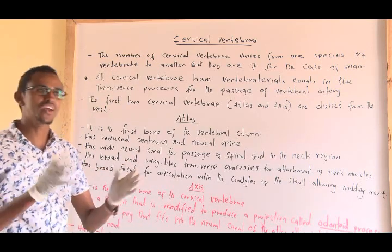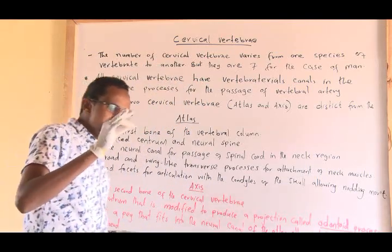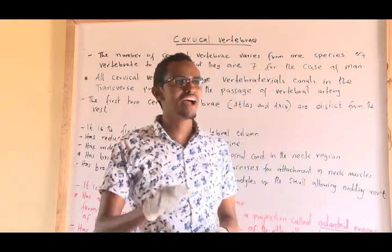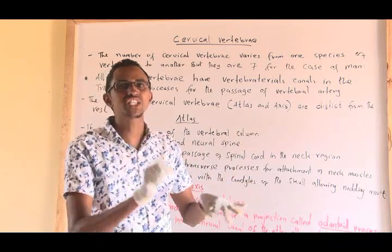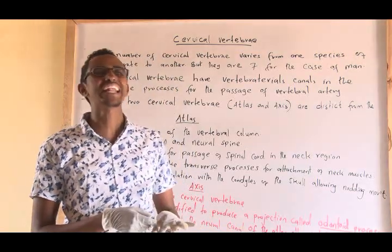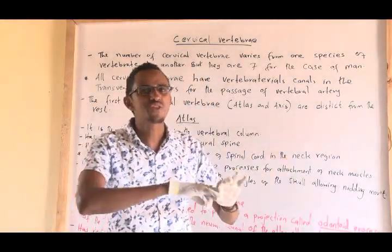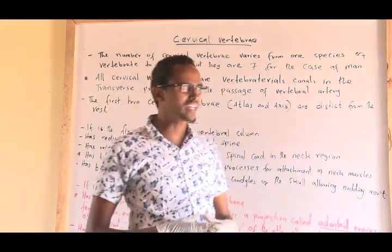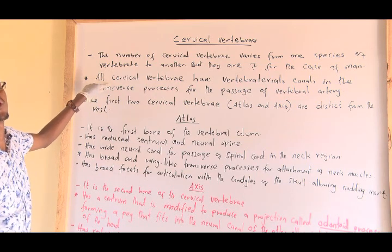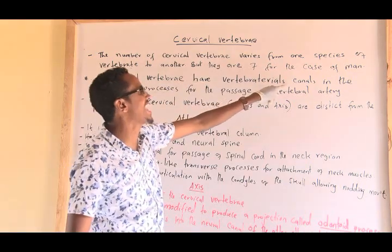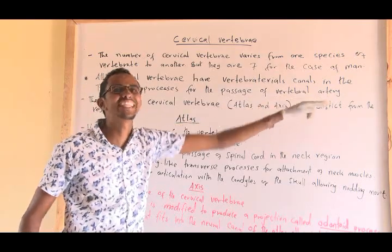For the case of human beings, as special mammals, human beings have seven cervical vertebrae in the neck region. The special feature that distinguishes cervical vertebrae from the rest is the presence of a canal in the transverse processes — that hole is called the vertebral arterial canal. The vertebral arterial canal functions as a pathway for blood vessels, specifically the vertebral artery that supplies blood to the vertebral column and to the spinal cord inside it.